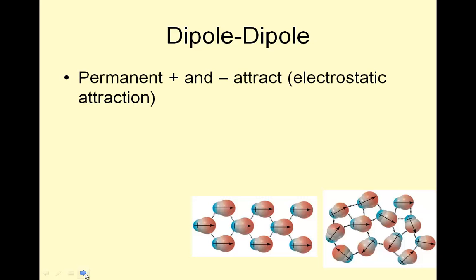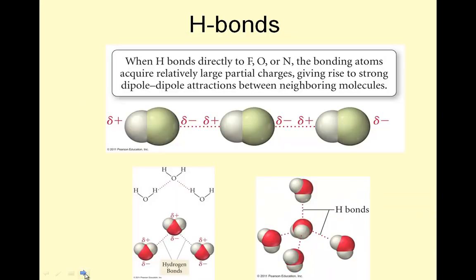Dipole-dipole. Permanent, positive, and negative attract. Electrostatic attraction. This is from polar molecules. So these things have a permanent dipole. And the positive end is attracted to the negative end. And the negative end is attracted to the positive end. And this would be a solid. Look how neat and orderly it is. And this would be a liquid. Not quite so neat and orderly, but the attractions are stuck there.